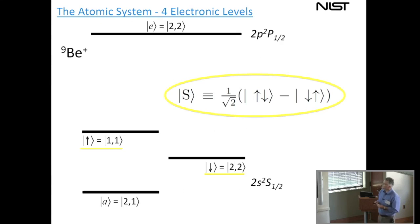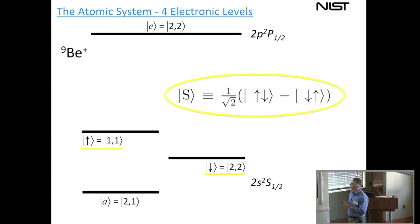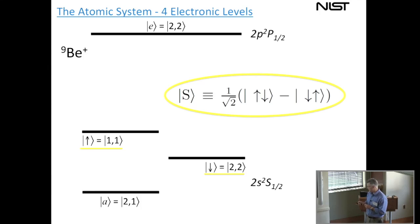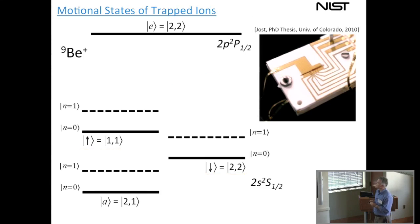Let me describe the system. It's a four-level system. We use two ground-state hyperfine states as qubits — up and down — for two beryllium ions. We also have an auxiliary hyperfine state and a fast-decaying excited state. The state we're trying to produce in steady state is the singlet state in this basis. The ions are in the microfabricated trap, so we also have motional states — a ground state and first excited state.